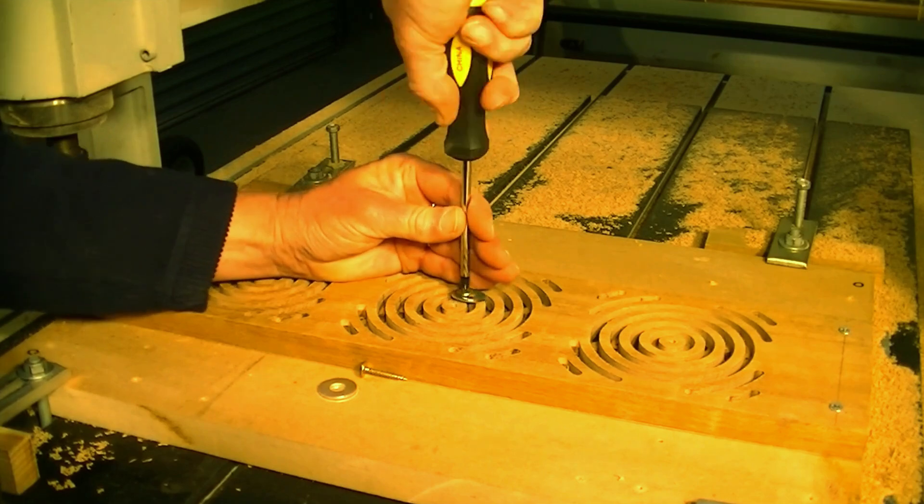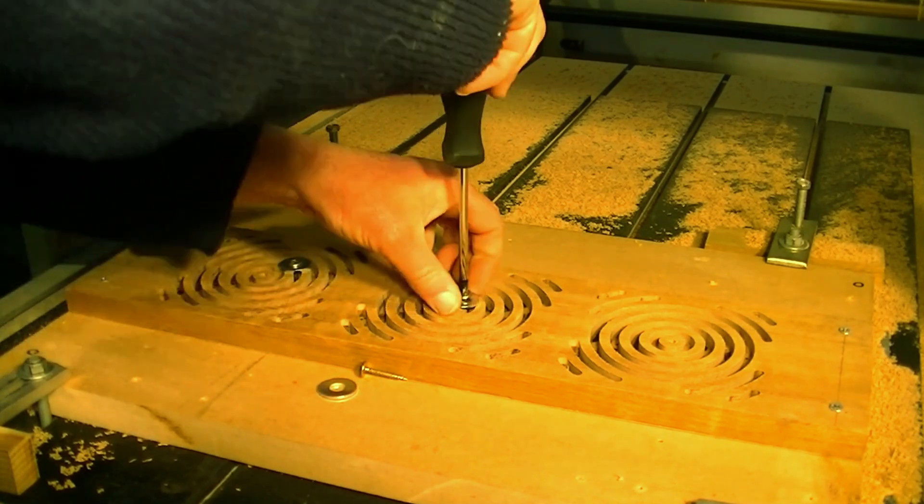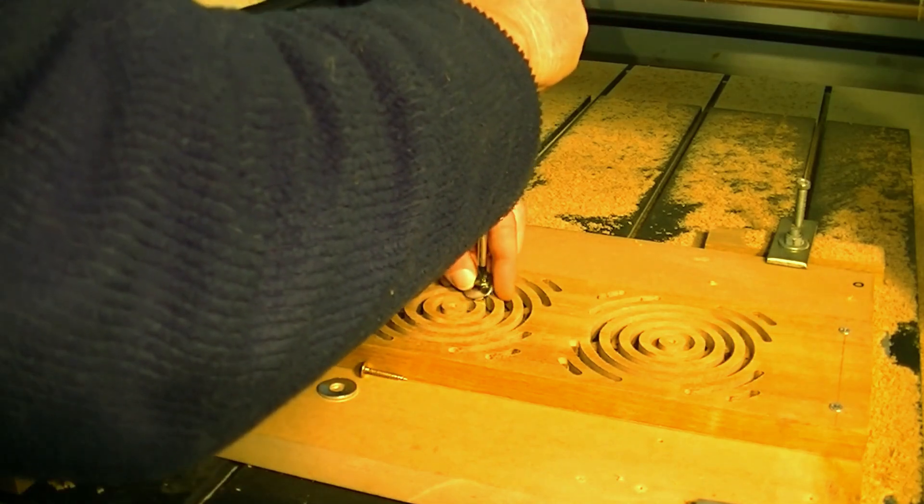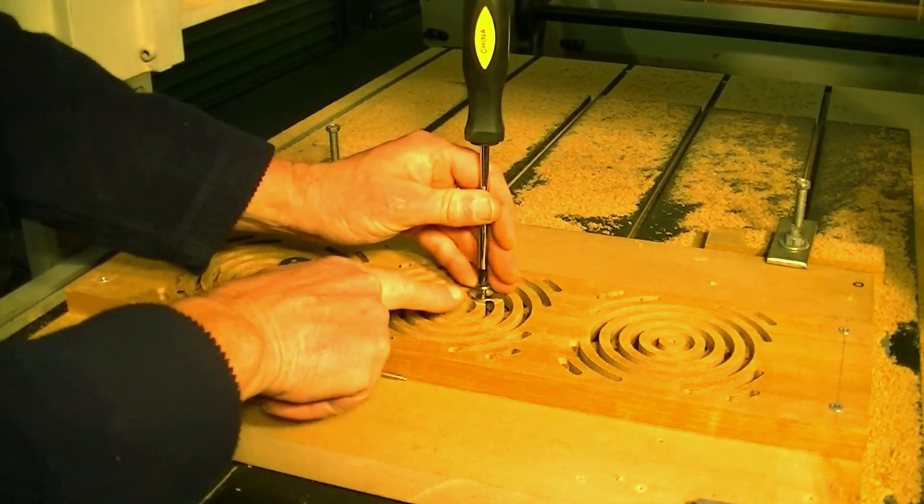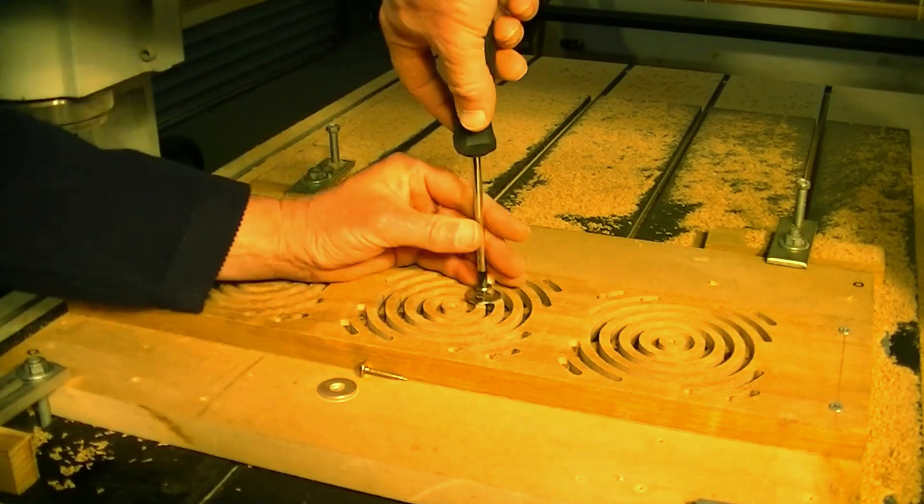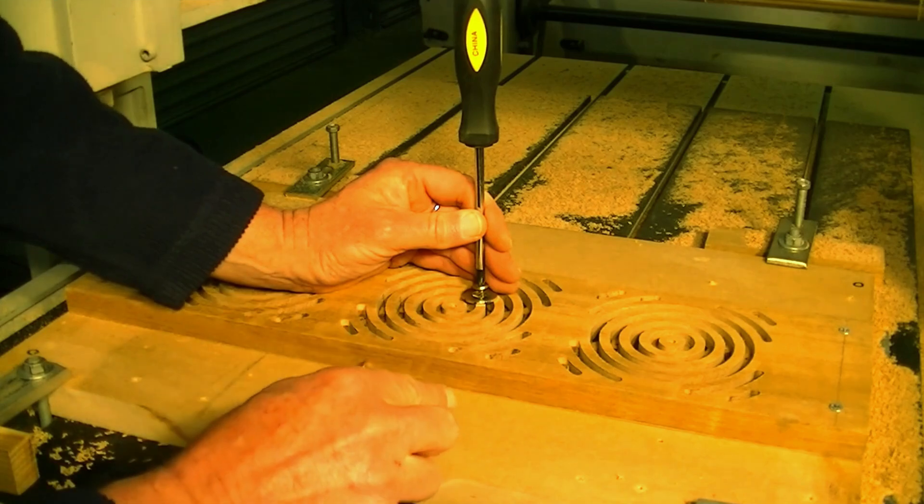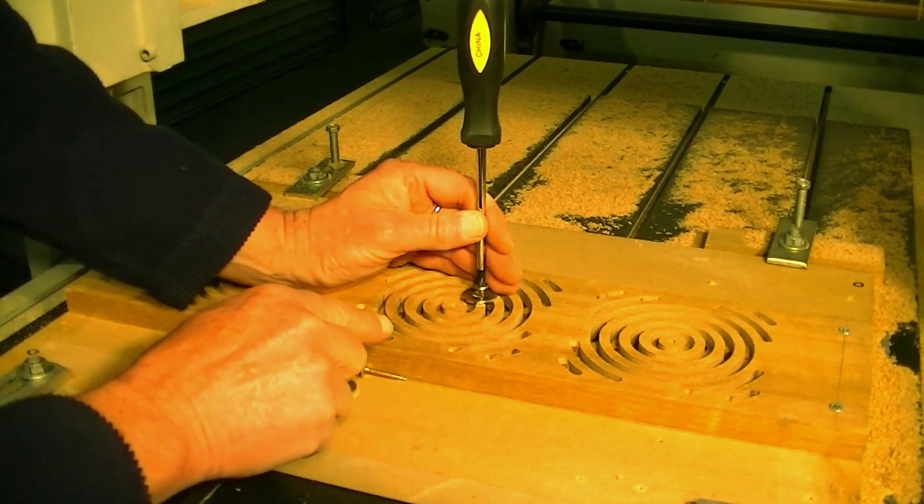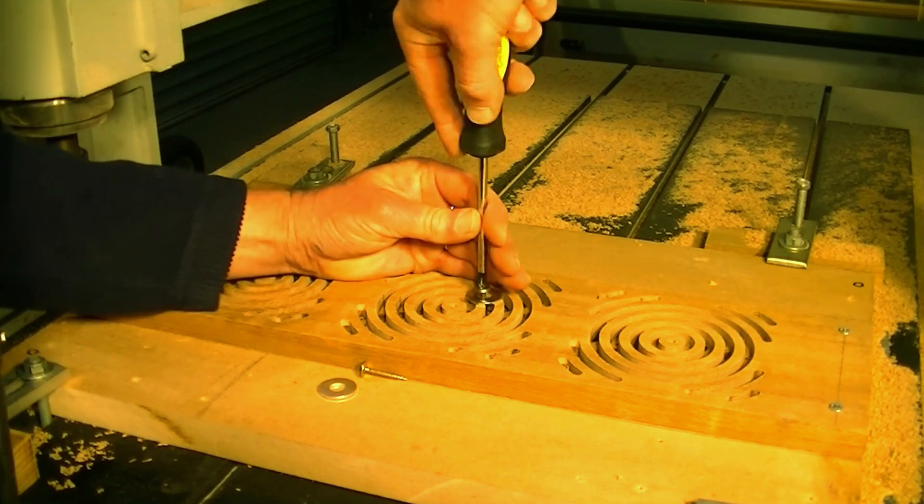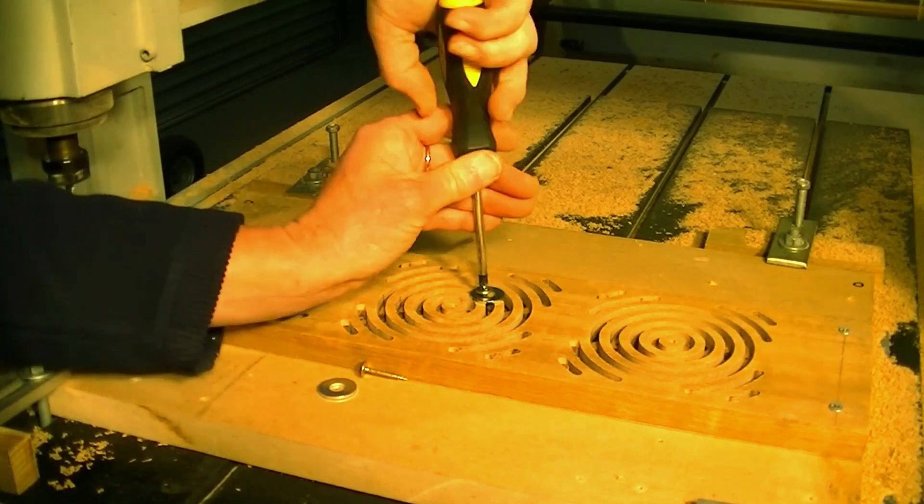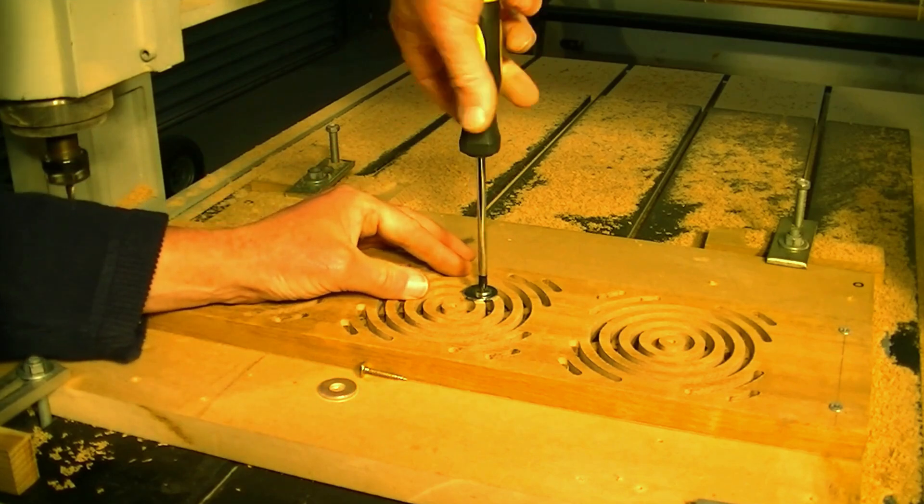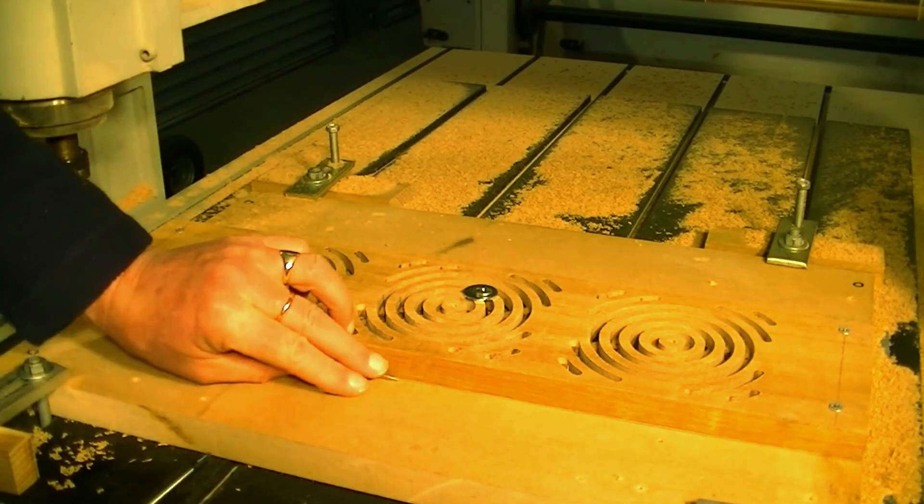But for me to cut them out with the CNC machine, I just need to clamp them down a little bit, just to make sure that they don't move when we're coming to the last cut and dig into the side of it and make a mark. So just simply clamp it down so it's sufficient.